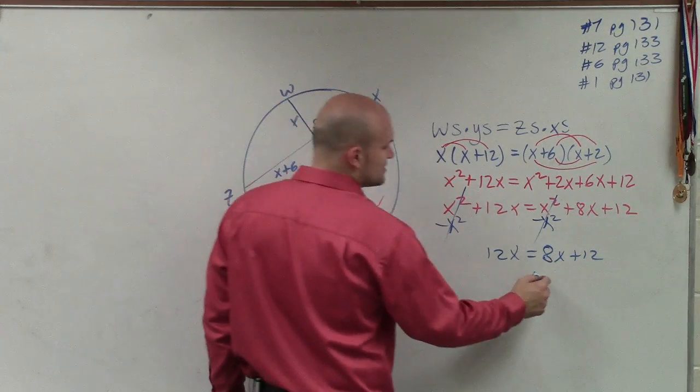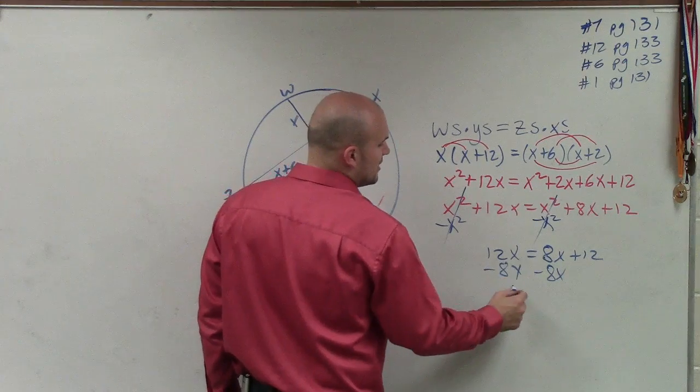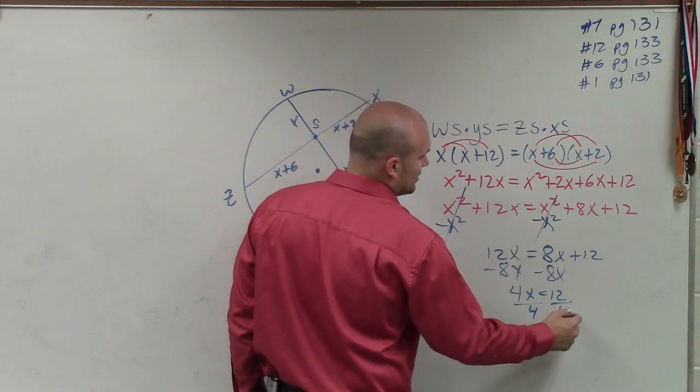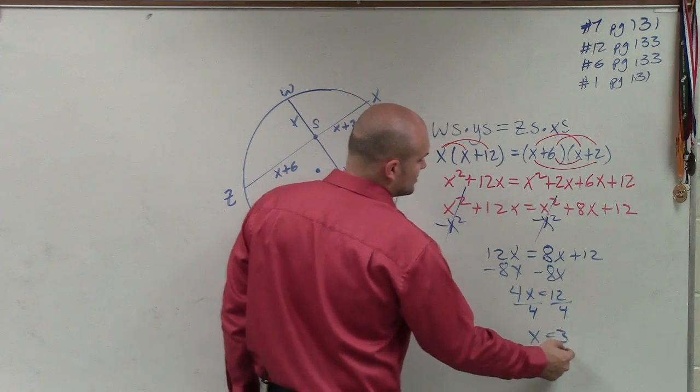Again, get the x's on the same side. So I subtract 8x on both sides. And I get 4x equals 12 divided by 4, divide by 4, x equals 3.